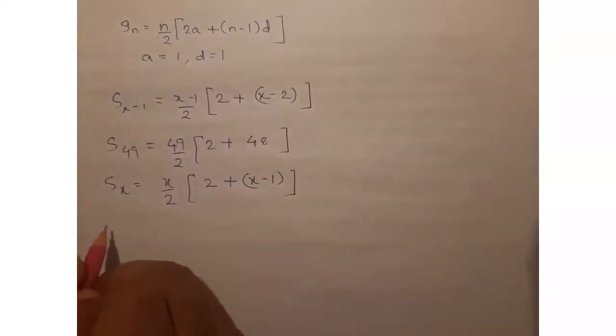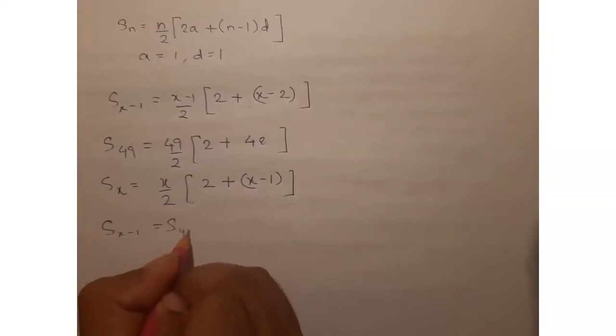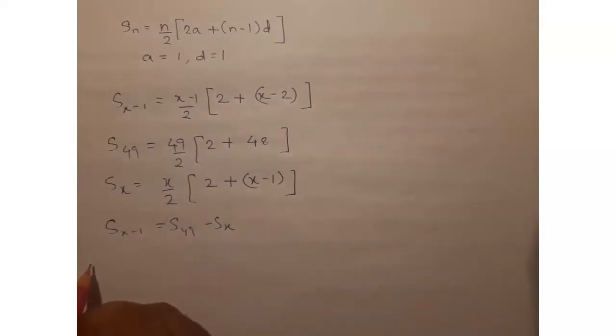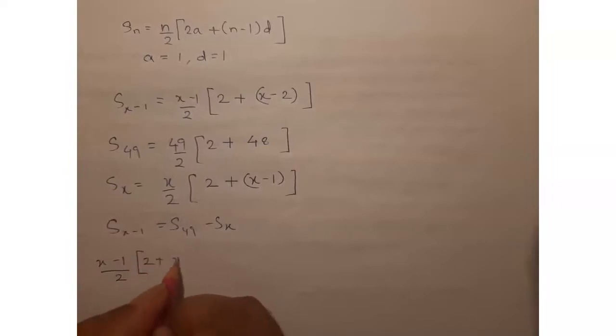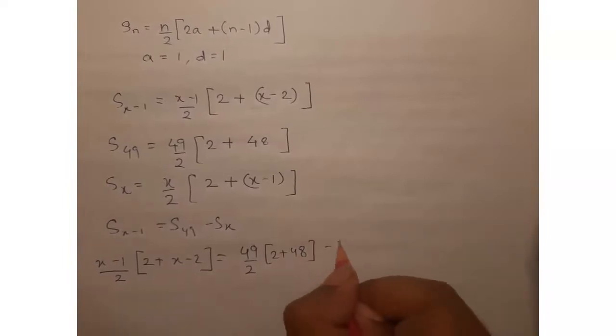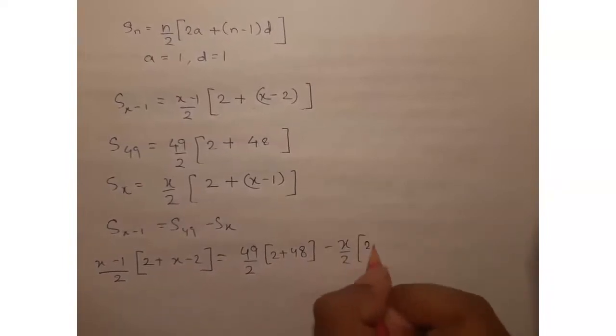So we already know the condition that S x minus 1 equals S49 minus Sx. Substituting, we have x minus 1 by 2 into 2 plus x minus 2 equals 49 by 2, 2 plus 48, minus x by 2, 2 plus x minus 1.